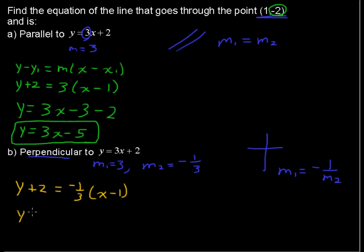I'll leave the y plus 2 over here for just a bit. y plus 2 equals negative 1 third x plus 1 third. I'm running out of room there, so I'll subtract 2 here, and I get y equals negative 1 third. Let's see, 1 third minus 2 gives us negative 1 and 2 thirds, which is negative 5 thirds.